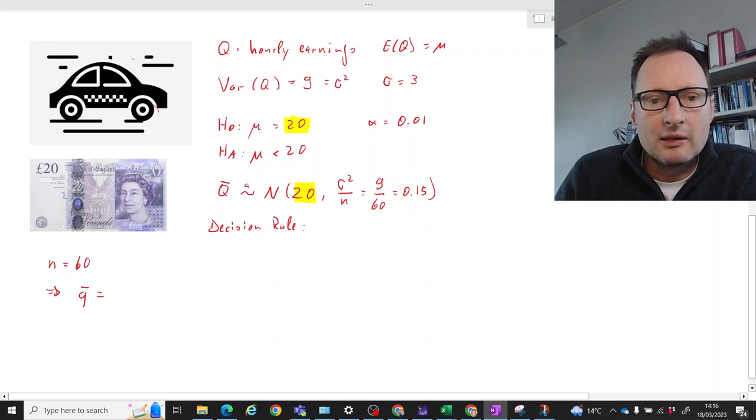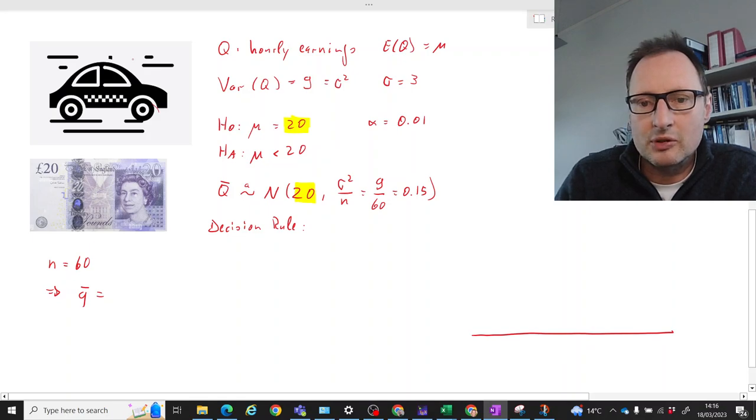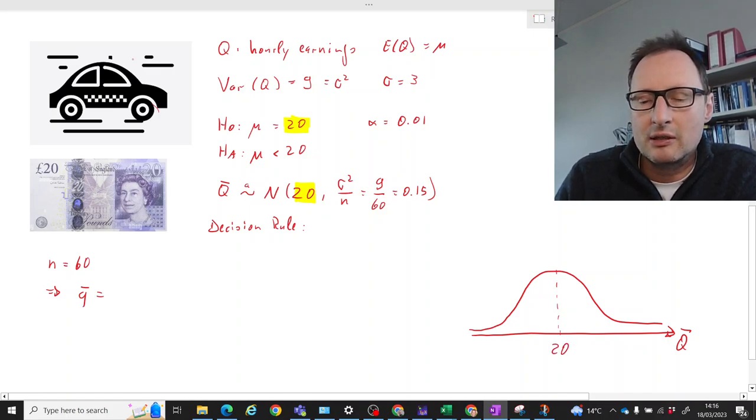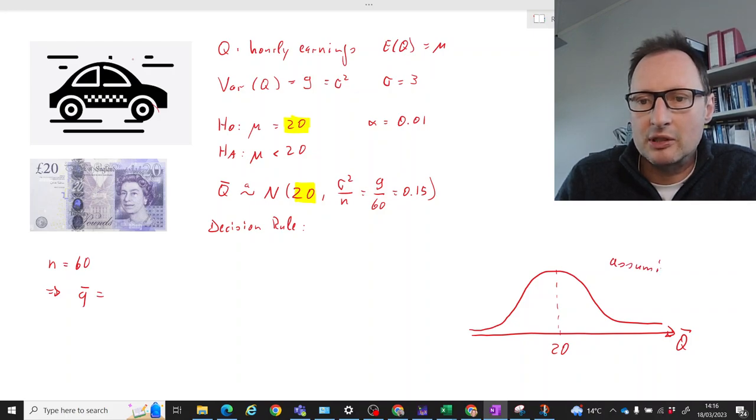So then let us think a little bit graphically here. So here's our Q bar, and under the null hypothesis that will be centered around 20. So let me just say that is assuming H naught is correct.